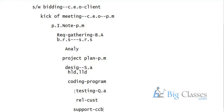Once planning is completed, designing is done by system analysts and architecture people. They design the project in two types: HLD (High Level Design) and LLD (Low Level Design). Based on the LLD, programmers start coding. Once coding is completed, the application goes to testing engineers for system testing. After testing, the application is released to the customer. Finally, maintenance is handled by the CCB — the Change Control Board.